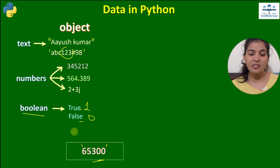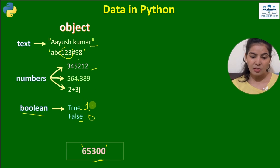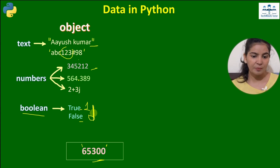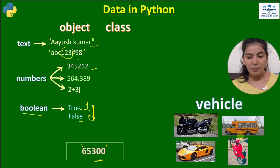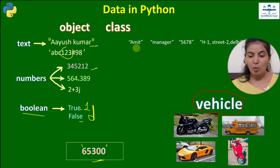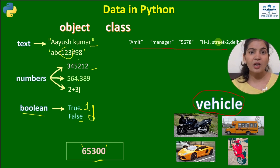In Python, all of this data is considered an object. A name is an object, a number is an object, boolean values are also objects — everything is considered an object in Python. If all of these are objects, they must have some class. Just like in real life — bike, bus, scooter, car are all different objects but they belong to the same class: vehicle. Similarly, objects enclosed in double quotes are all text and belong to the string class.